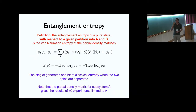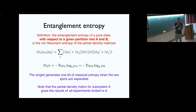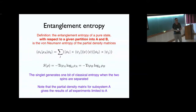The reduced density matrix is physical because anything you can measure just on subsystem A will be given by the trace of the local operator with this partial density matrix. If you're only looking at a piece of the system and you find some entropy, you can't tell if that's physical entropy because the whole system is in a mixed state, or whether the larger system is in a pure state and you're just generating entropy by looking at a piece of it — that's not a physically distinguishable question if you only have the subsystem.